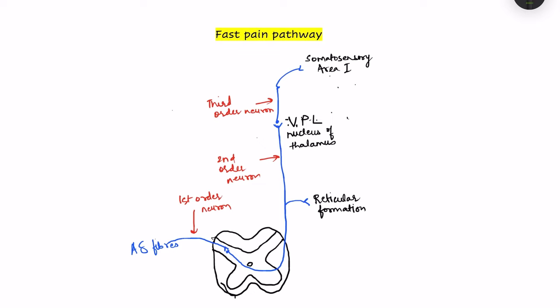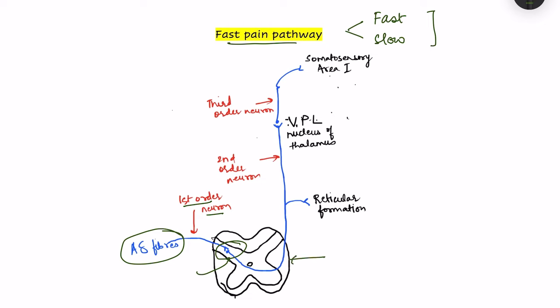Pain is of two types: slow pain and fast pain, and so we have two different pathways which carry these types of pain. The fast pain pathway starts with A-delta fibers, which form the first order neuron. They make contact with another neuron in the dorsal horn of the spinal cord, where a synapse occurs, and then the second order neuron arises from the dorsal horn.